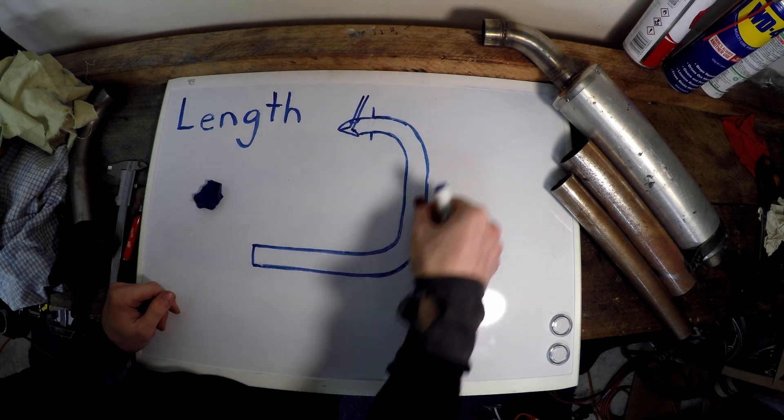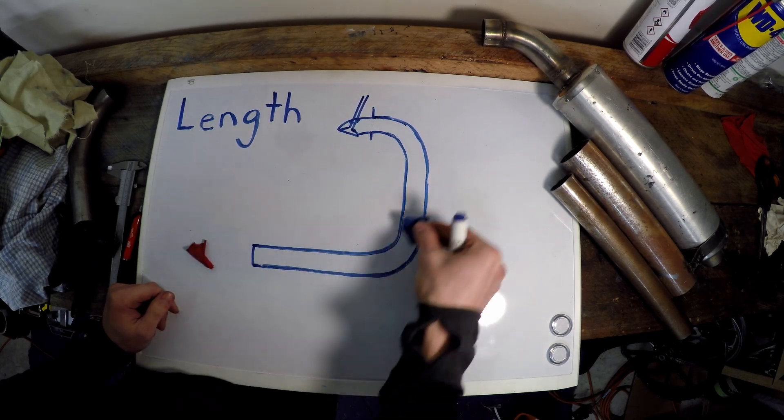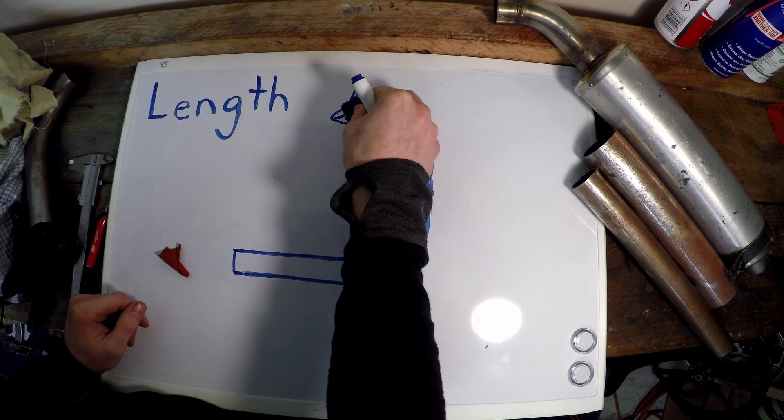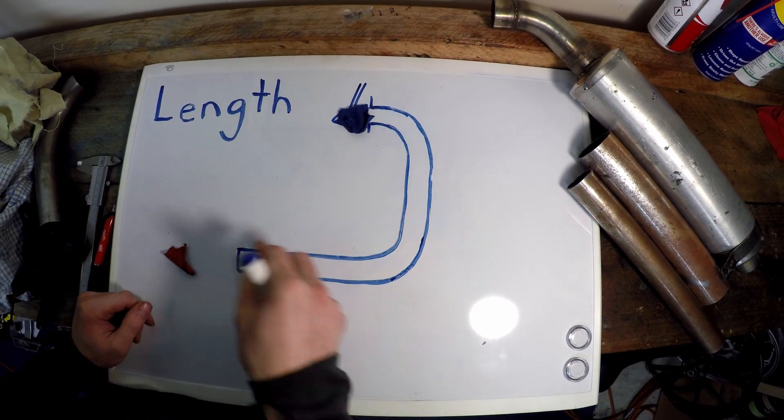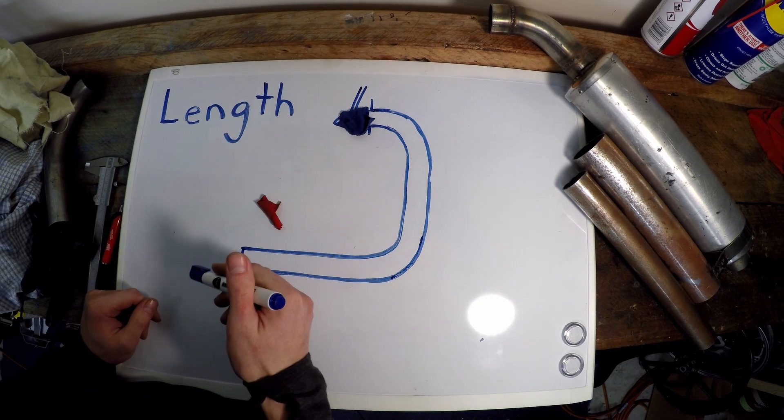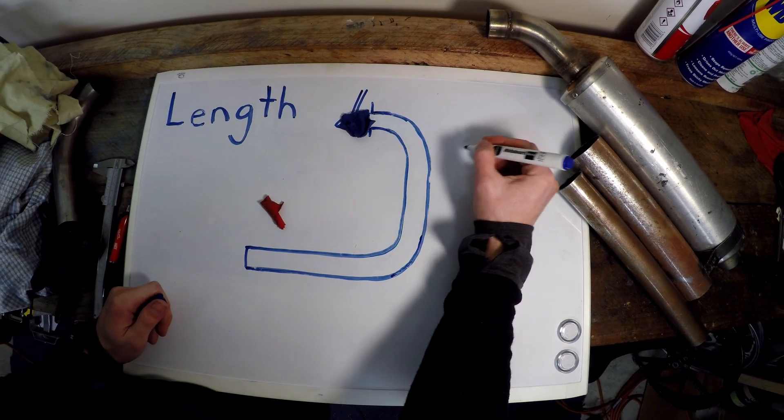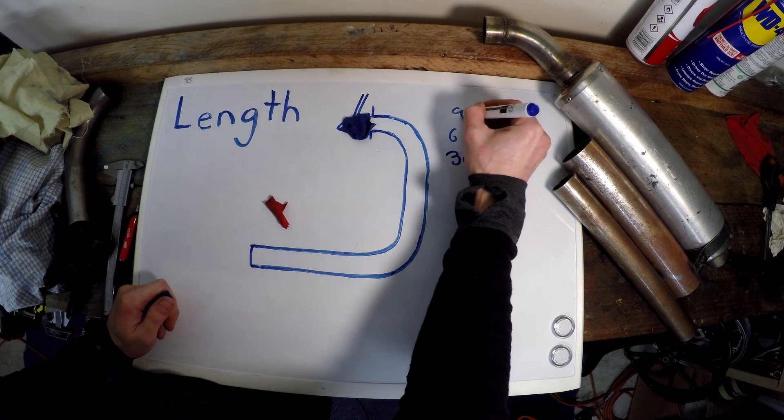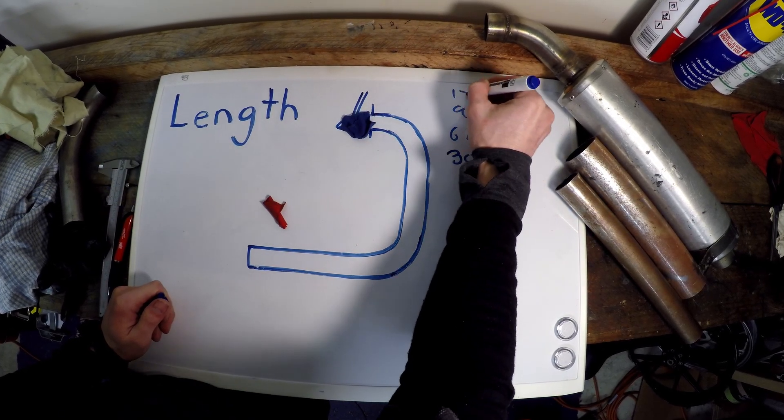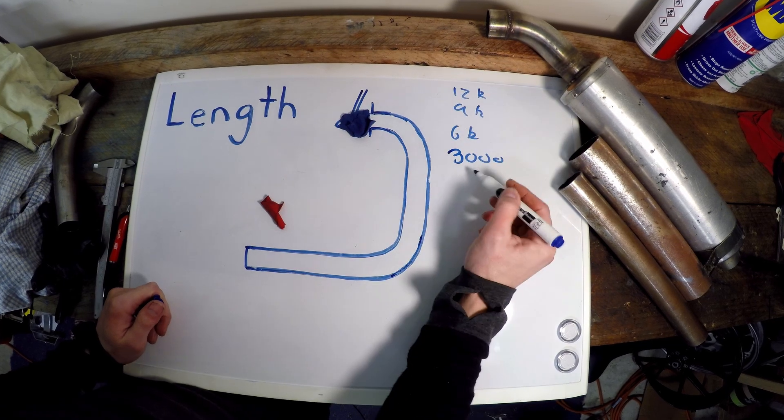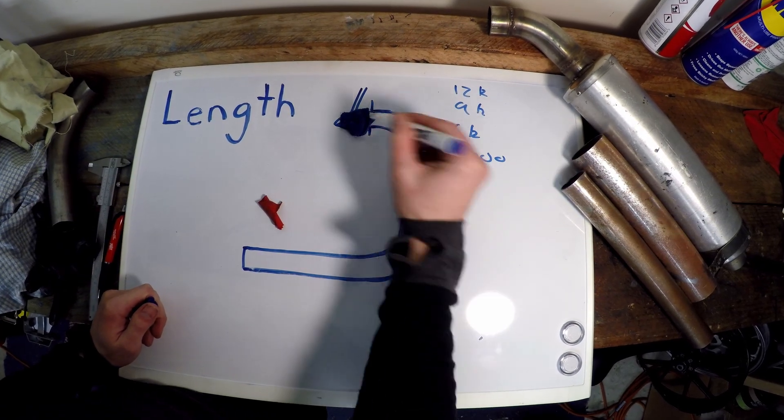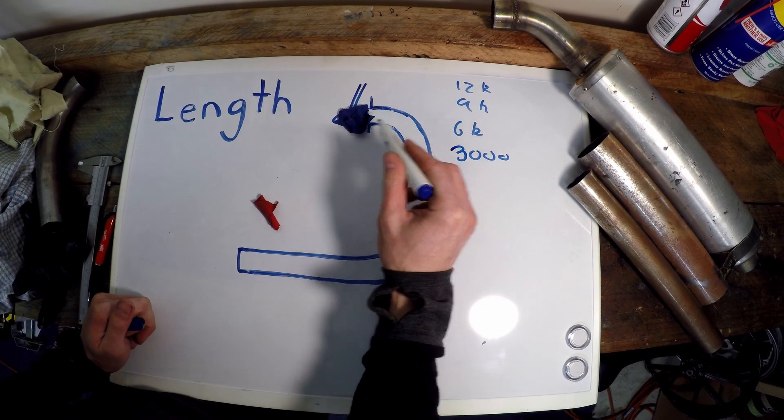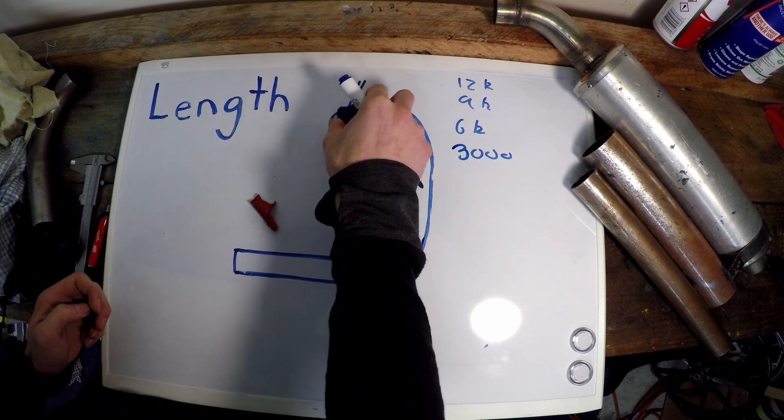This timing of our exhaust gas pressure waves is RPM dependent. This effect, our negative pressure wave getting there and increasing our efficiency, will only work at certain RPMs. Let's say it's 3,000, 6,000, 9,000, and 12,000 RPM, but in between there this effect will not be working. What we want to do is make this effect as useful as possible, and how we do that...